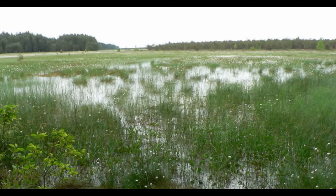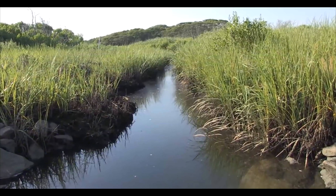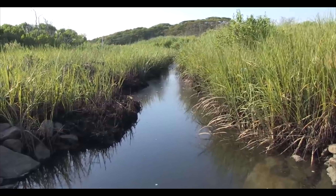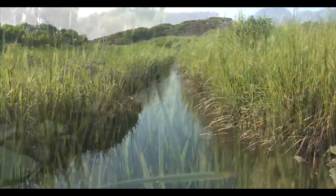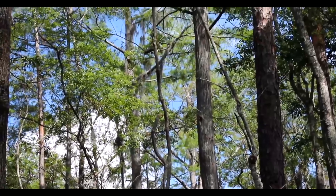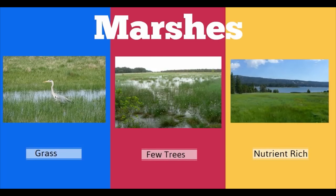An easy way to understand wetlands is to take a look at some. There are four main types of wetlands. Marshes are wetlands without trees and lots of grass. Marshes can often be found at the edge of lakes and streams, where they form a transition between the aquatic and land ecosystems.